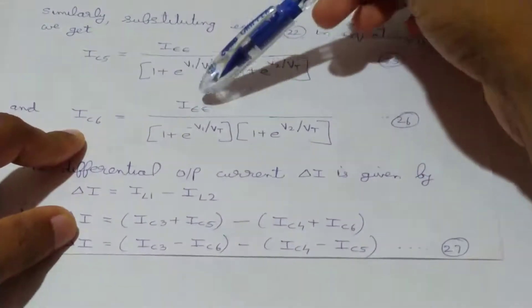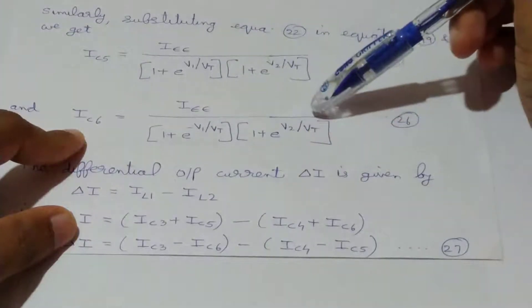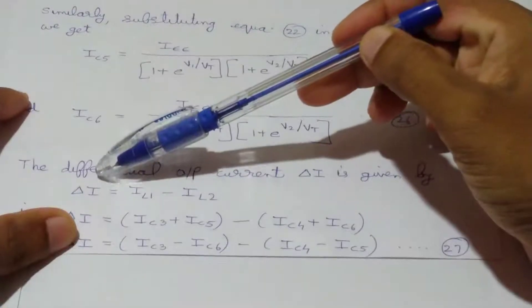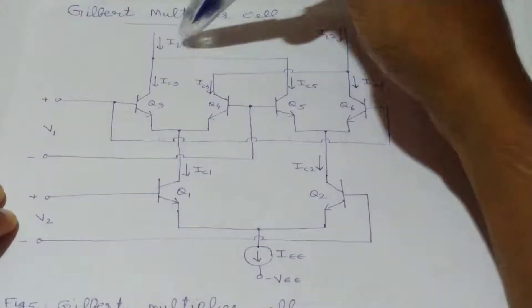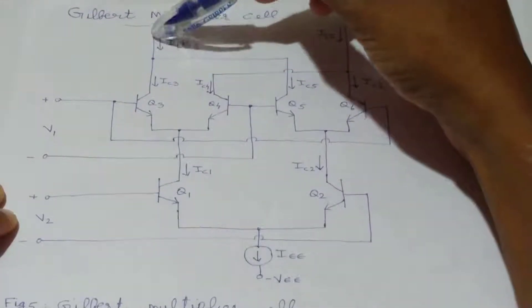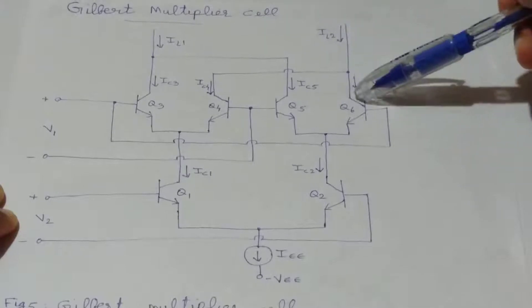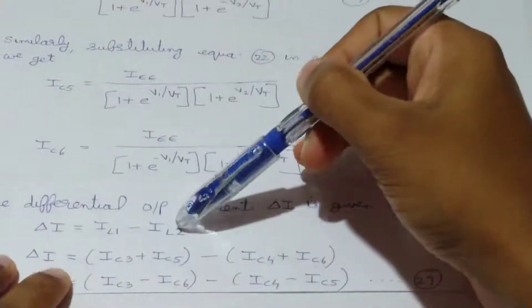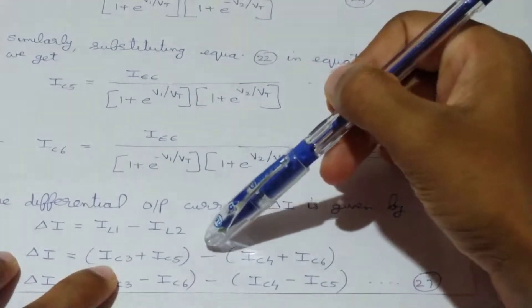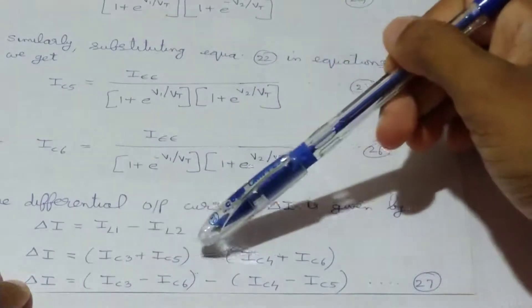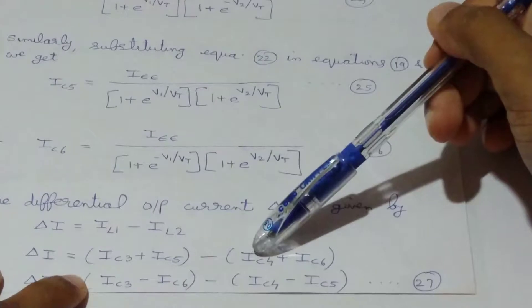Now we calculate the differential output current delta I, where delta I equals IL1 minus IL2. From the figure, IL1 equals IC3 plus IC5, and IL2 equals IC6 plus IC4. Hence delta I equals IC3 plus IC5 minus IC4 plus IC6, which can be rewritten as delta I equals (IC3 minus IC6) minus (IC4 minus IC5). This is equation 27.